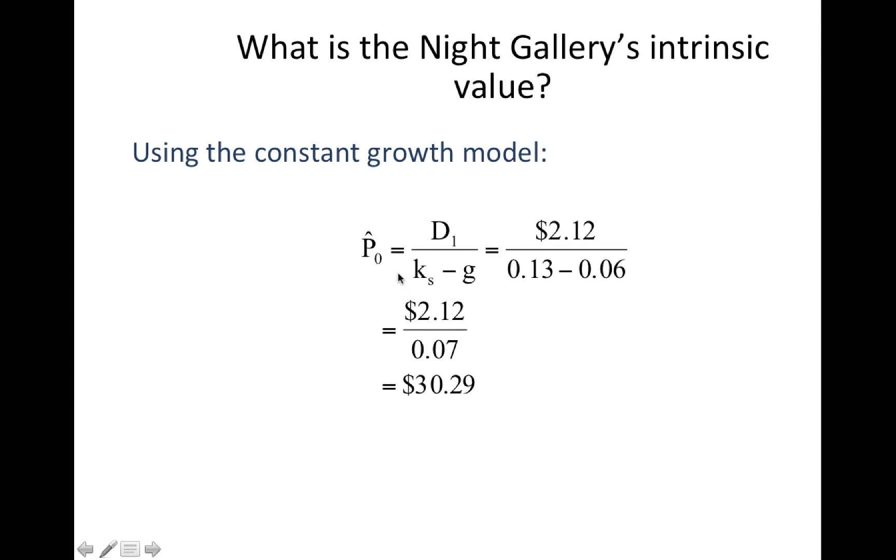What is the price of Night Gallery? Very simply stated, dividend 1, the 2.12 that we just calculated, over R or K, 13% minus the 6%. 2.12 divided by 0.07, the price is $30.29.